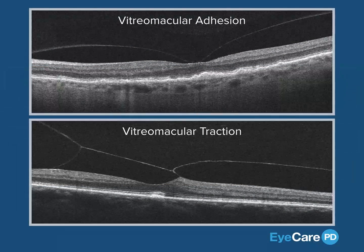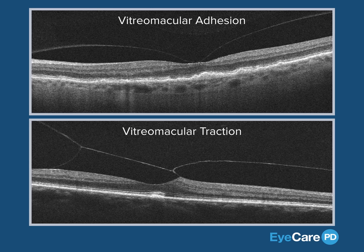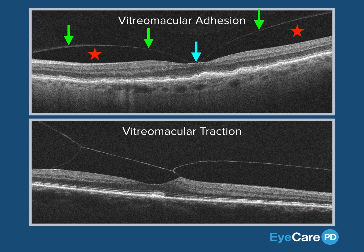When the posterior cortical vitreous is visible on OCT imaging, and seen with a space between the retina and vitreous, and the retinal tissue remains in its normal anatomic configuration, we call this vitreomacular adhesion, or VMA.